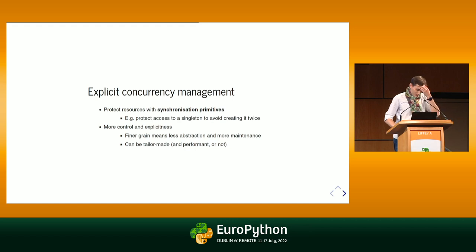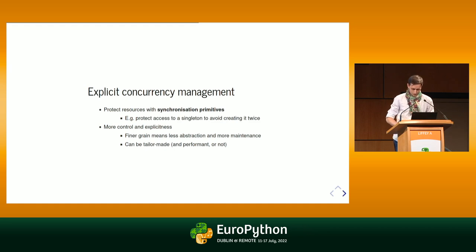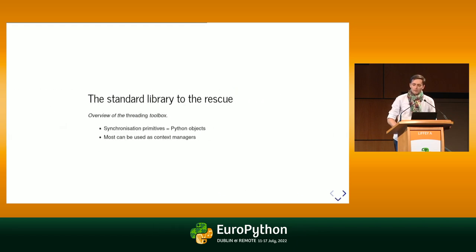Sometimes implicit management is not ideal, especially if you're looking to squeeze performance out of the system. Locking the whole resource — like guarding against two threads accessing the repository at the same time — can be too damaging in terms of performance. In that case, you'll want to take matters into your own hands and use synchronization primitives to protect the shared resource against multiple access. This offers a tailor-made approach that can be more performant, but it takes care and craft.